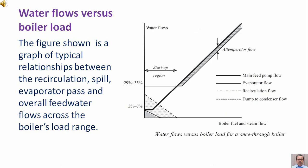The figure shown is a graph of the typical relationship between the recirculation flow, the spill to evaporator pass, and overall feed water flows across the boiler's load range.